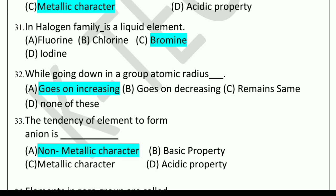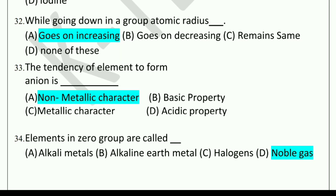Next question: In the halogen family, dash is a liquid element. Options: fluorine, chlorine, bromine, or iodine? The answer is bromine. Next question: While going down in a group, atomic radius dash. Options: goes on increasing, goes on decreasing, remains the same, or none of these. The answer is goes on increasing.